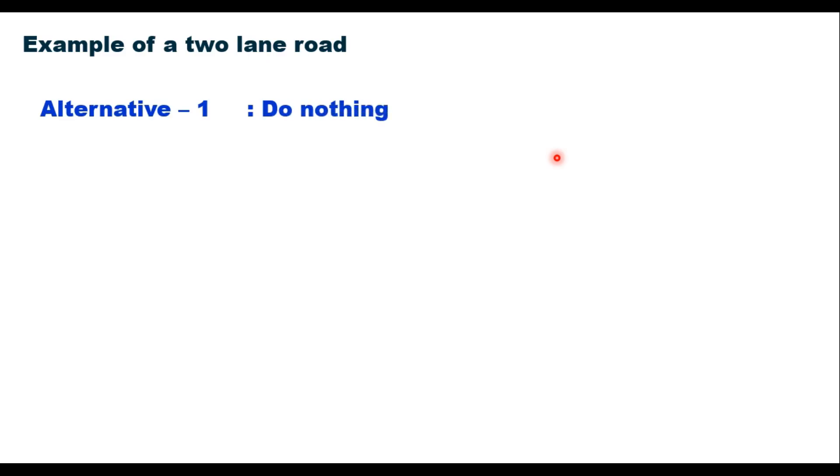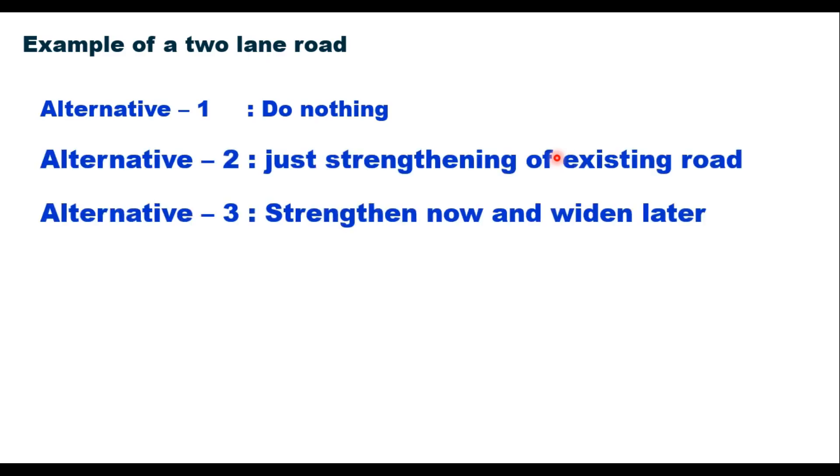The first is do-nothing. Second is just strengthen the existing road. Alternative three is strengthen the road now and widen later when it is due. And alternate four is strengthen and widen the road now itself. These alternatives are in the order of their increasing present cost.